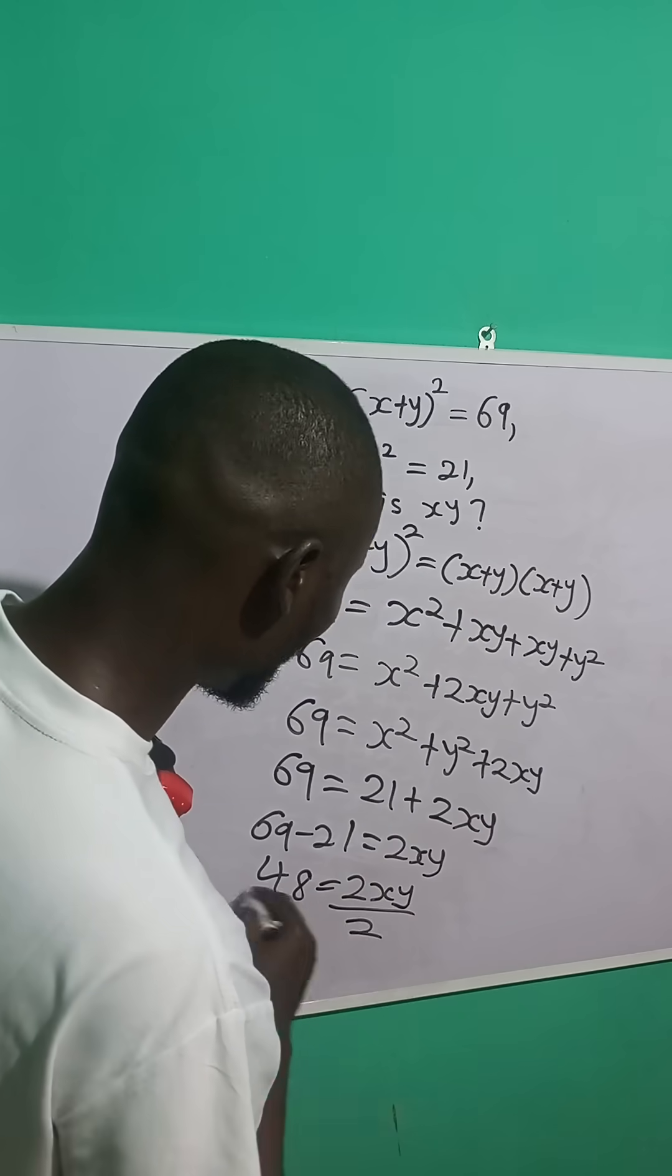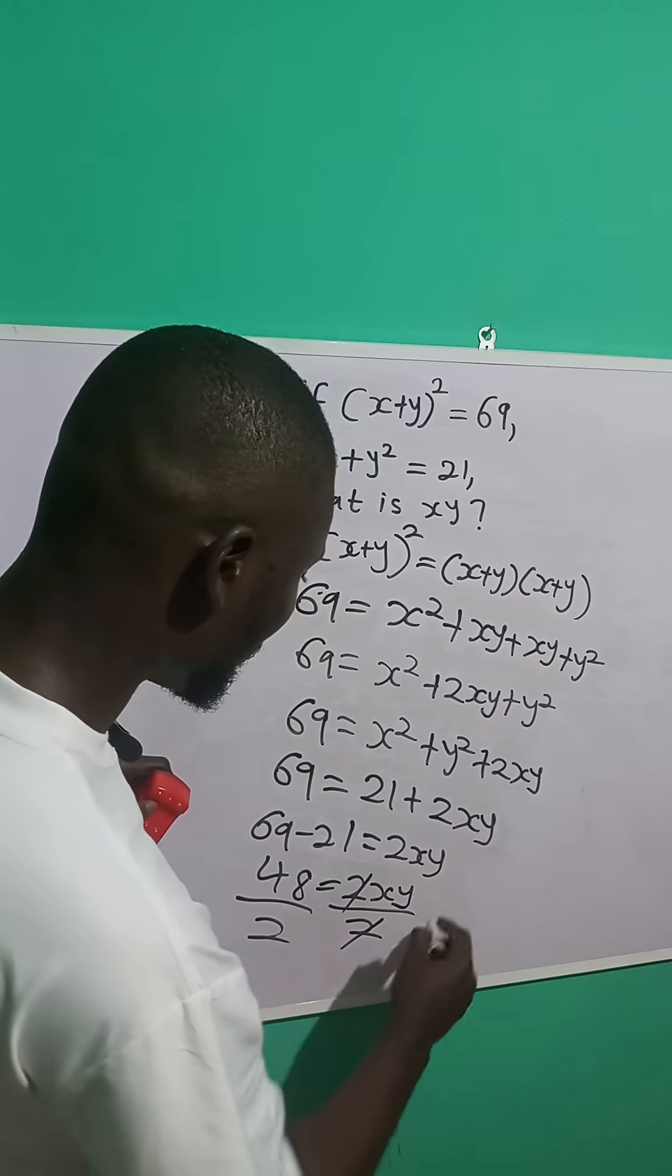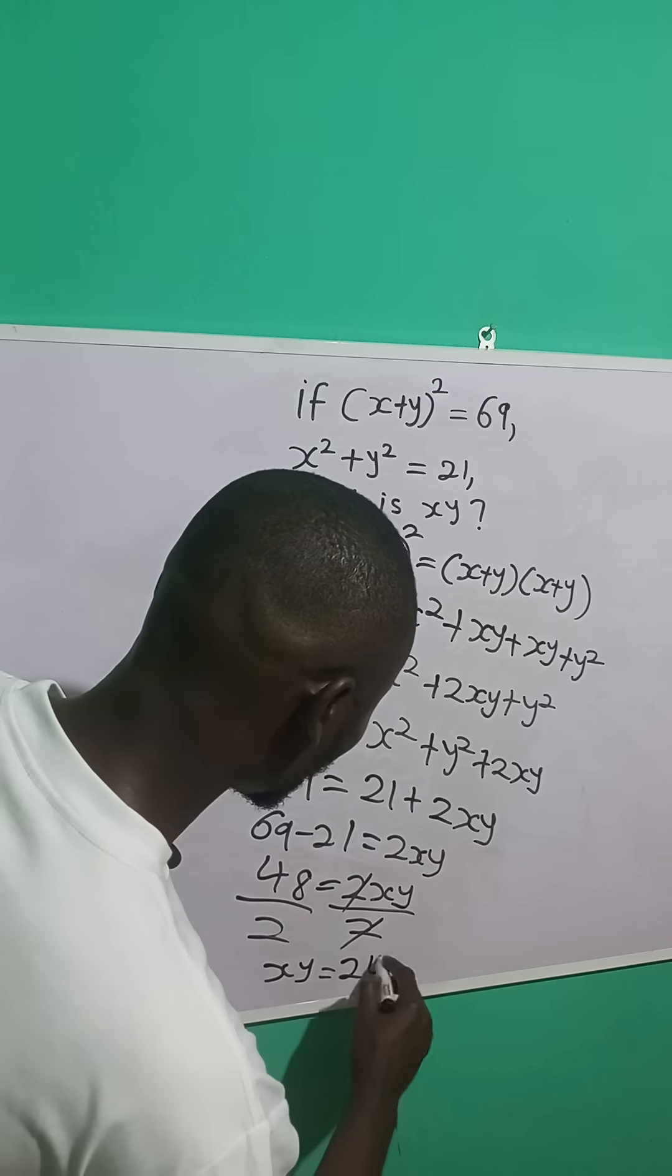So I'm going to divide both sides by 2. So this cancels this. So xy is equal to 48 divided by 2, which is 24.